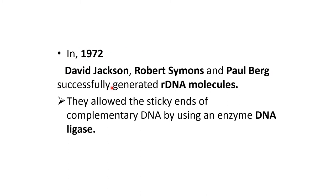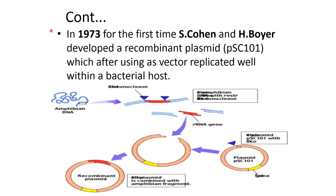In 1972, David Jackson, Robert Simone, and Paul Berg successfully generated a recombinant DNA molecule. They joined the sticky ends of complementary DNA using the enzyme DNA ligase. In 1973, for the first time, Stanley Cohen and Herbert Boyer developed a recombinant plasmid which, after using a vector, replicated well within a bacterial host.